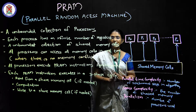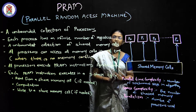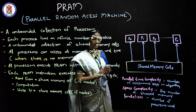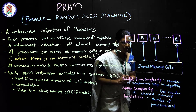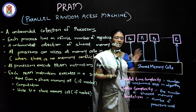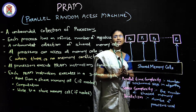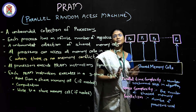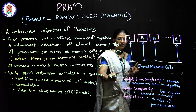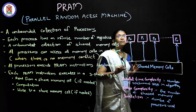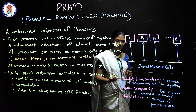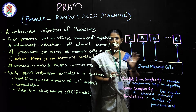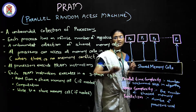We are now allowed to use Parallel Random Access Machines. We are going to cover three concepts. First, what is parallel time complexity — that is how many synchronous steps the algorithm takes. Second, space complexity — that is how many shared memory cells are used.